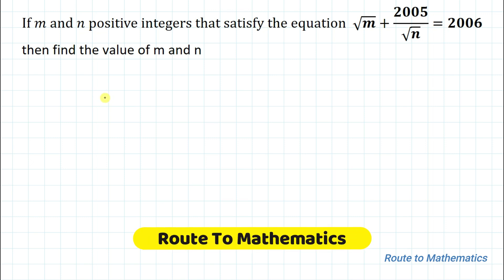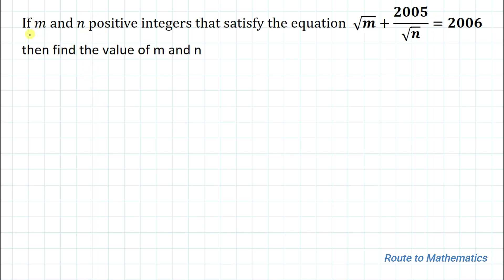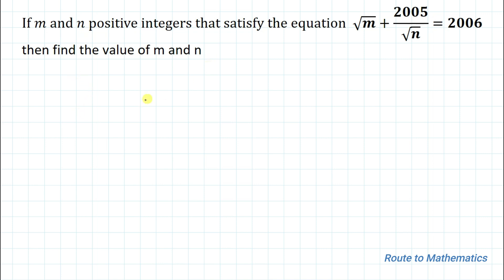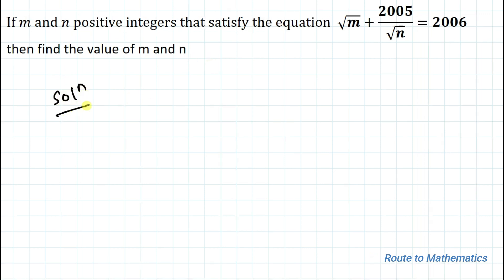Hello everyone, welcome to Root 2 Mathematics. In this video we are going to solve an interesting Olympic question. The given question is: if m and n are positive integers that satisfy the equation (√m + 2005) / √n = 2006, then find the value of m and n. We have two unknown values m and n, and we are asked to find them.